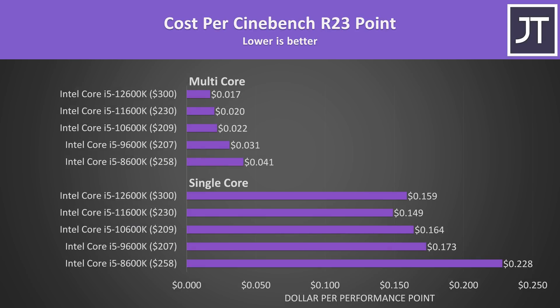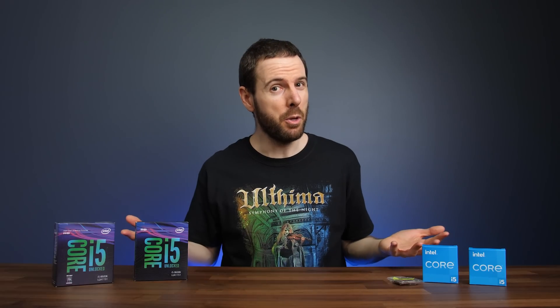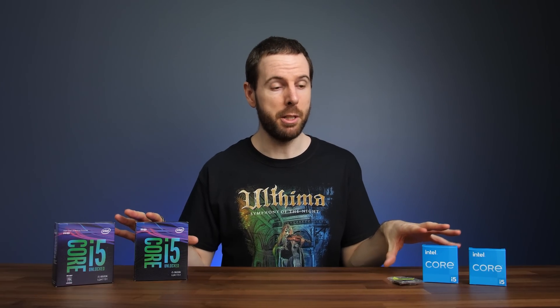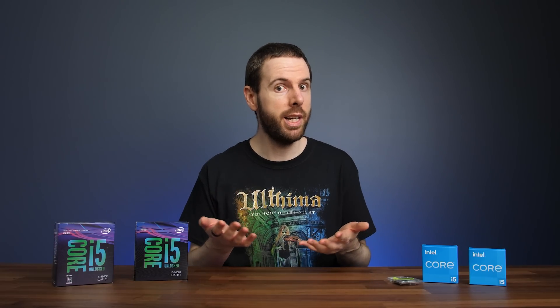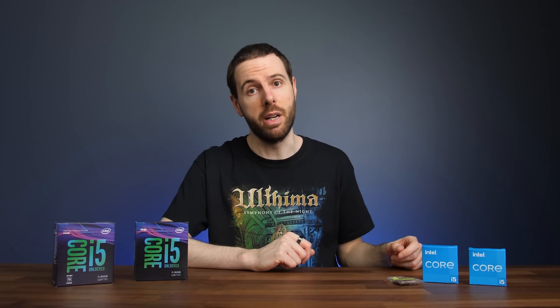The value picture is different in productivity workloads. This graph shows the 12th gen i5 offering much better value in Cinebench R23 multicore, while it was in second place for single core. In more productivity style workloads, 12th gen generally offers more value compared to older processors — which wasn't what we saw in gaming. For the most part there's generally less difference between these 5 processors in gaming, but in productivity workloads the differences can be much greater.